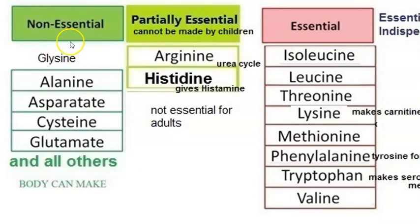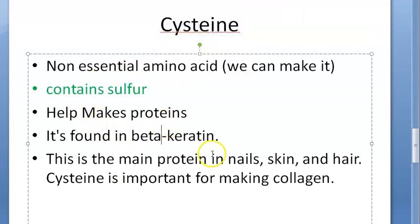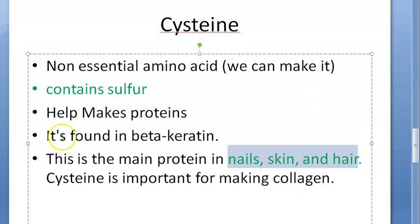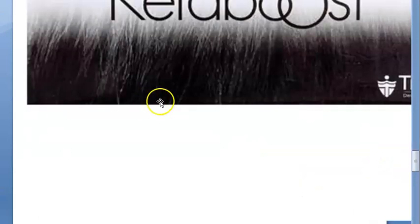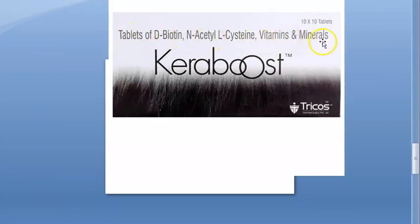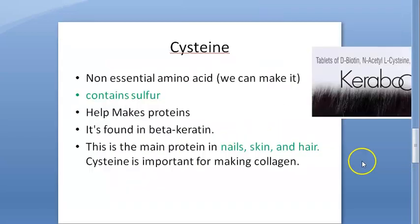Cysteine is a non-essential amino acid, meaning our body can normally synthesize it. But in homocystinuria, the body cannot synthesize it, which causes the disease. Cysteine contains sulfur and helps with hair, skin, and nails — that is why cysteine is found in hair, skin, and nail supplement tablets, often alongside biotin and vitamins.